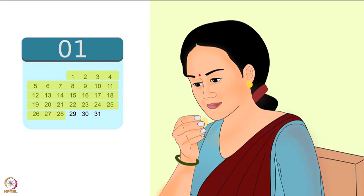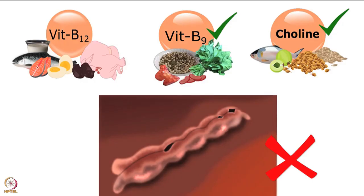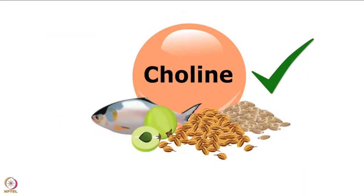In spina bifida, the baby's spine does not develop properly, leading to physical disabilities such as muscle weakness of the legs and paralysis, curved spine, loss of urinary bladder control, difficulty in eating and swallowing, and difficulty in learning and paying attention. Closure of the neural tube takes place within 28 days of conception, during which time the woman might not even know she is pregnant. Along with folate, vitamin B12 and choline are also important to prevent neural tube defects.